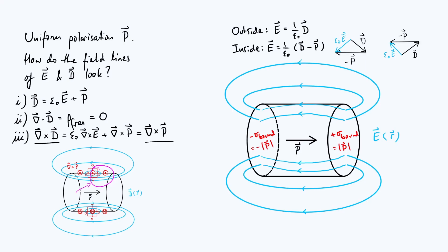Finally, as an interesting consistency check, try doing a line integral of E around a small loop in the interior region and convince yourself that the result would be zero — which is again consistent with what Maxwell's equations tell us. And that's all for now. Thank you for watching; I hope it's been interesting and I'll see you soon.